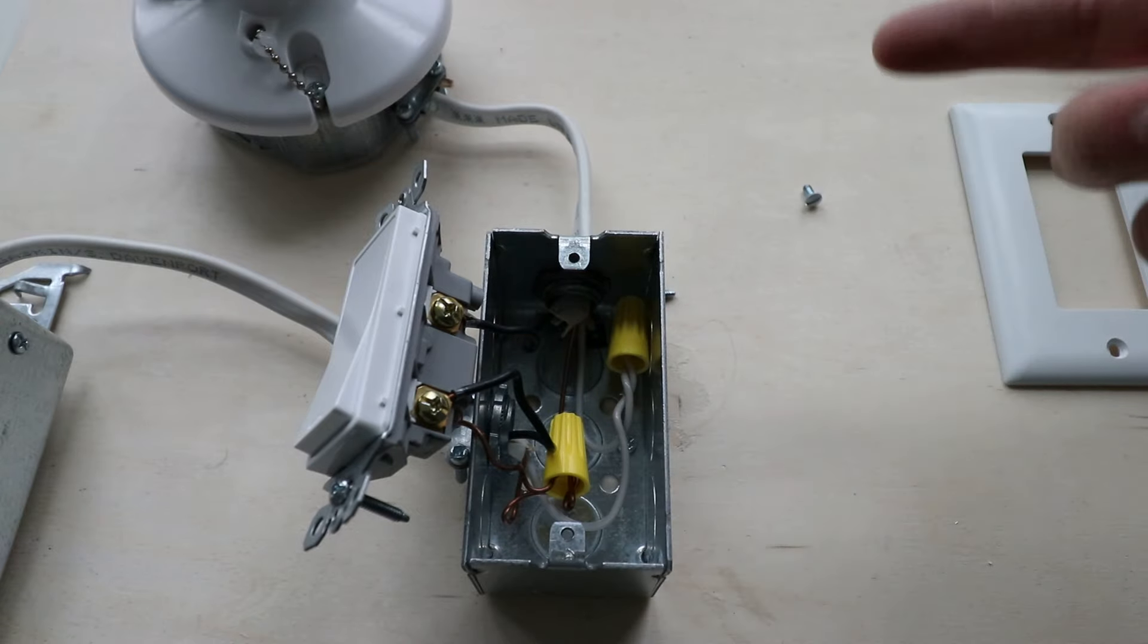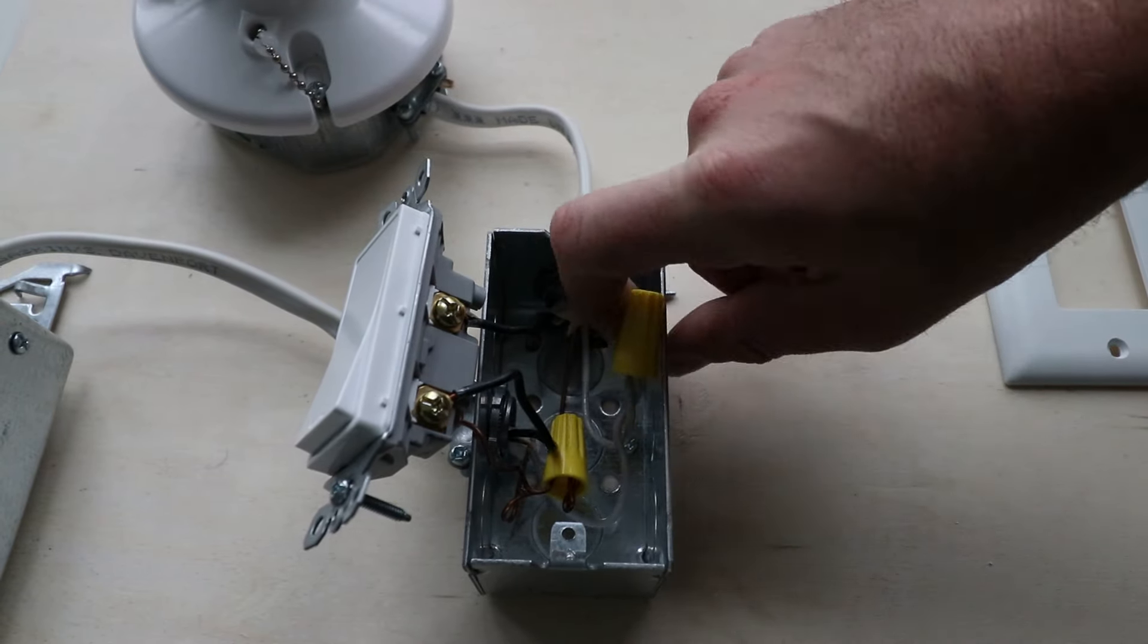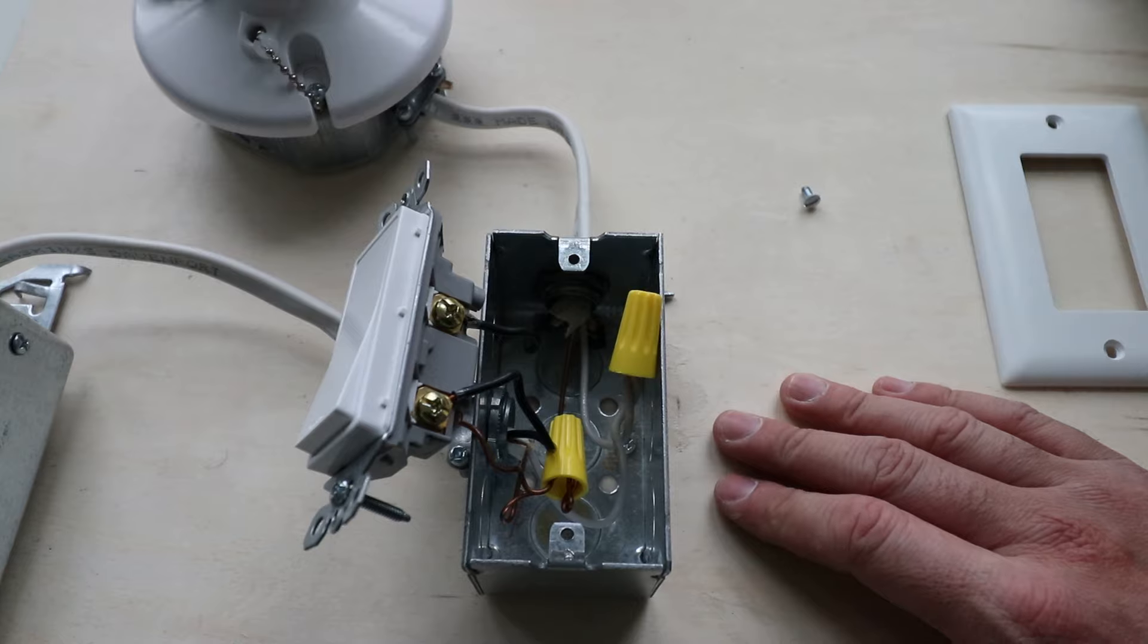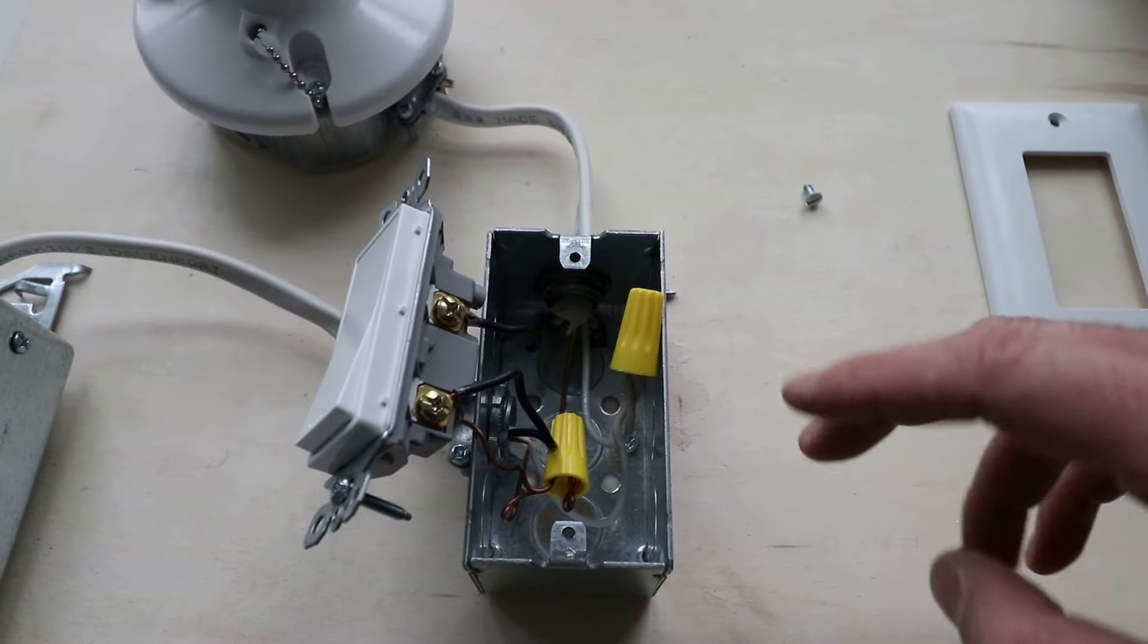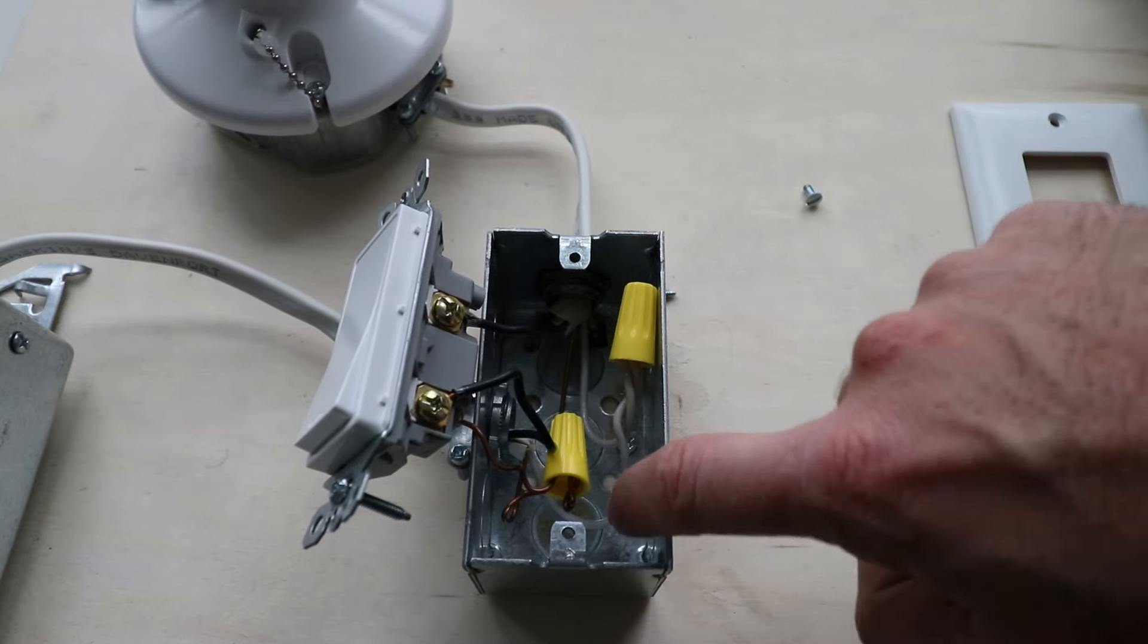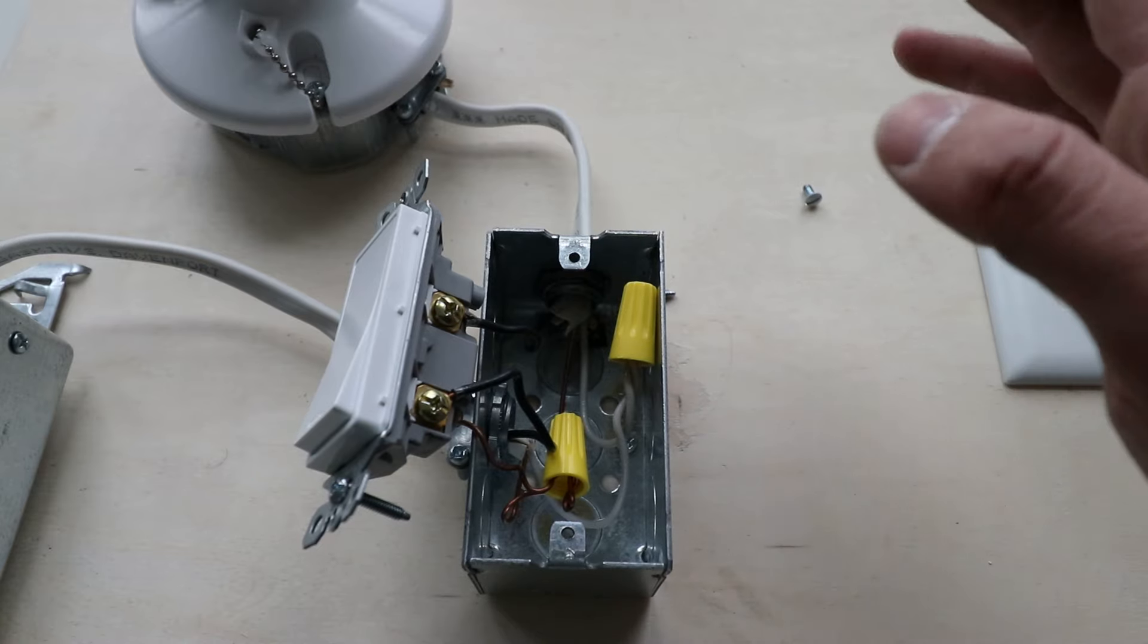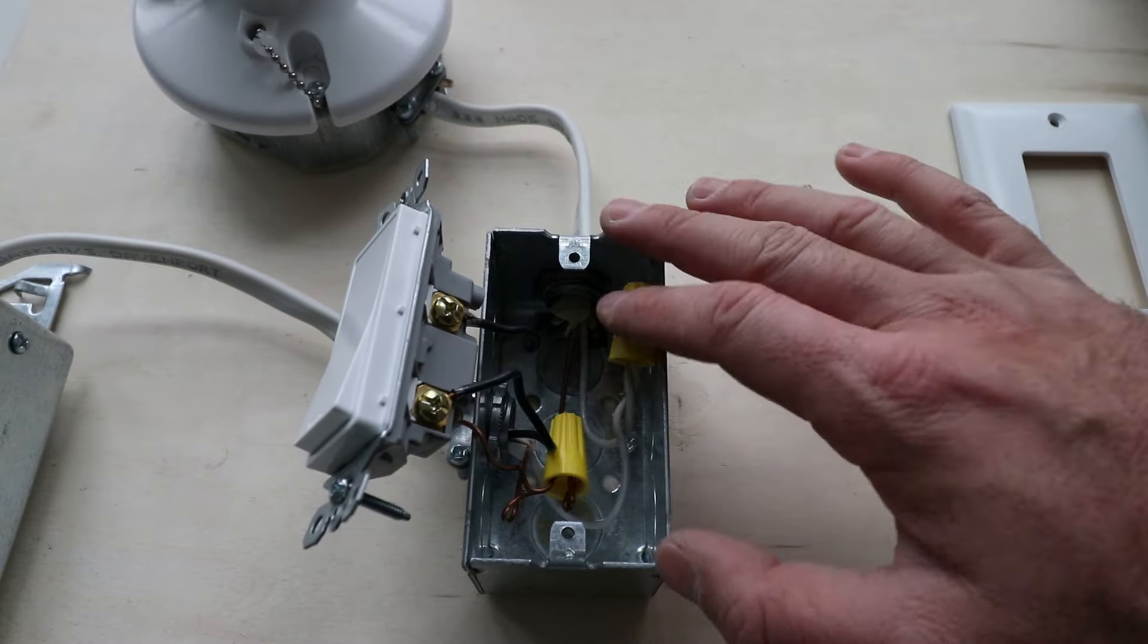But if you have a neutral wire, it doesn't matter. You can use pretty much any type of smart light switch out there that you want. So that is not a limitation. When you have a neutral wire, you can use pretty much any smart switch or smart dimmer switch that you want.